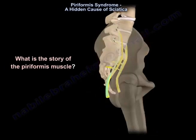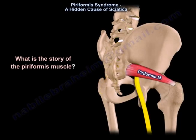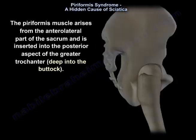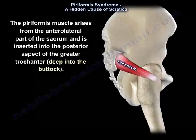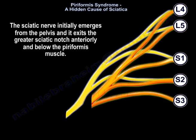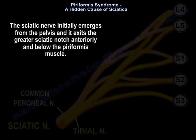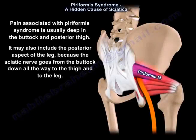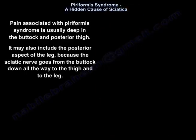What is the story of the piriformis muscle? The piriformis muscle arises from the anterolateral aspect of the sacrum and is inserted into the posterior aspect of the greater trochanter, deep into the buttock. The sciatic nerve initially emerges from the pelvis and exits the greater sciatic notch anteriorly and below the piriformis muscle.